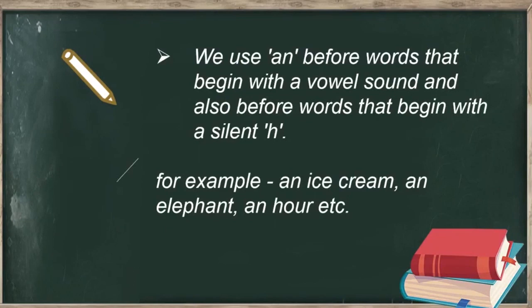We use 'an' before words that begin with a vowel sound, and also before words that begin with a silent h. The five vowels are a, e, i, o, u. Any word which has the sound of a vowel will be considered as a word beginning with a vowel, and we will use 'an' before it.